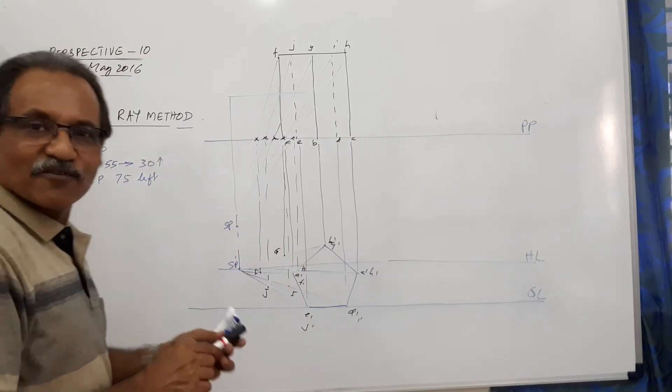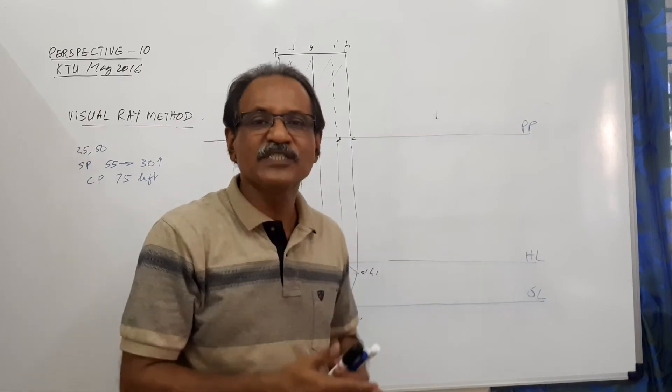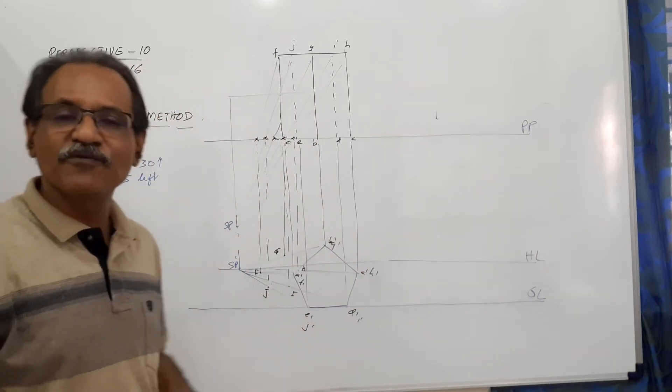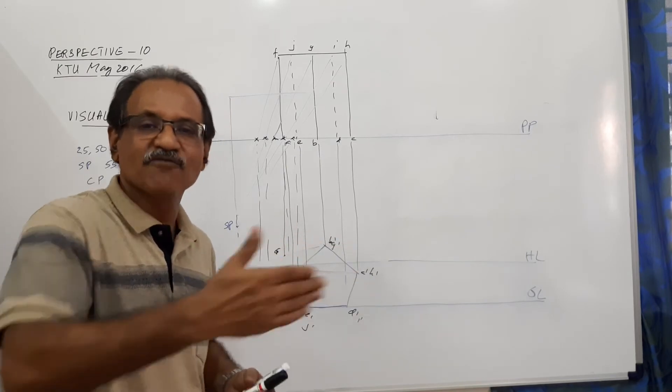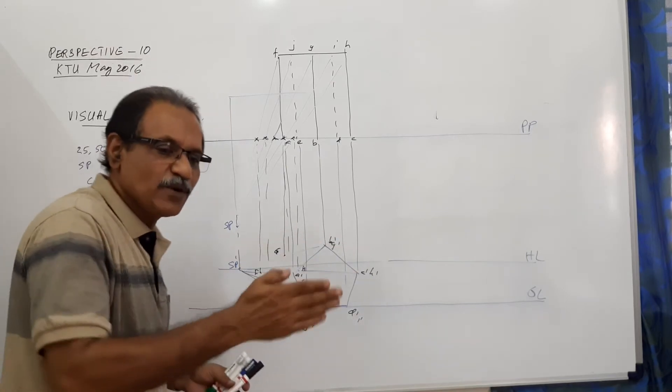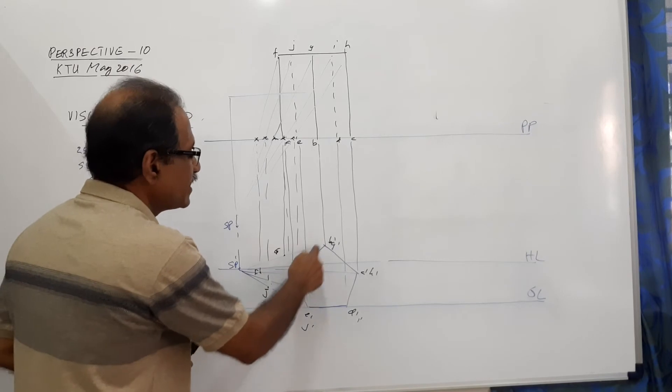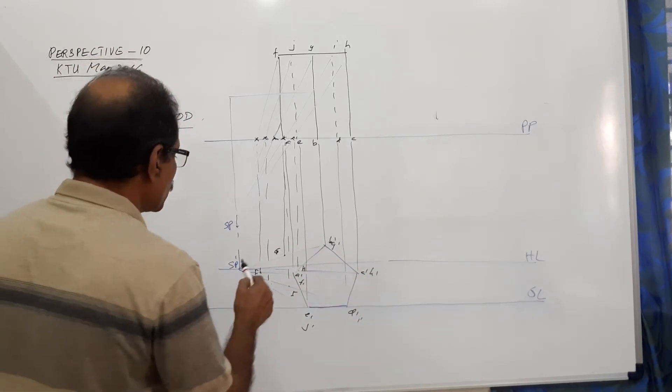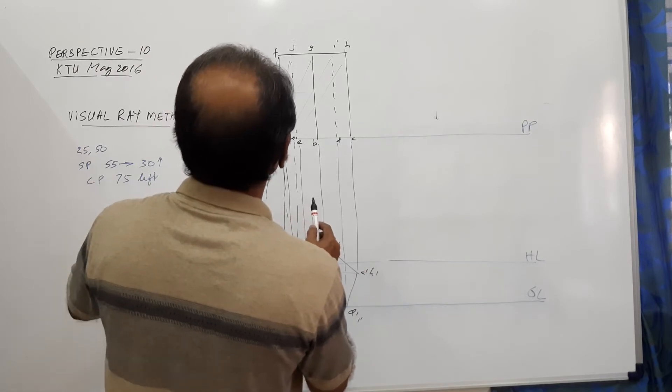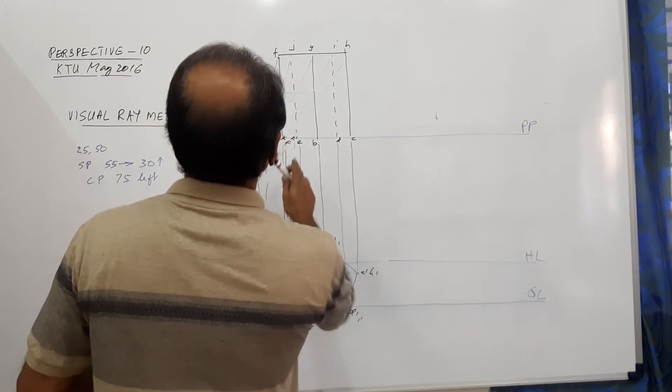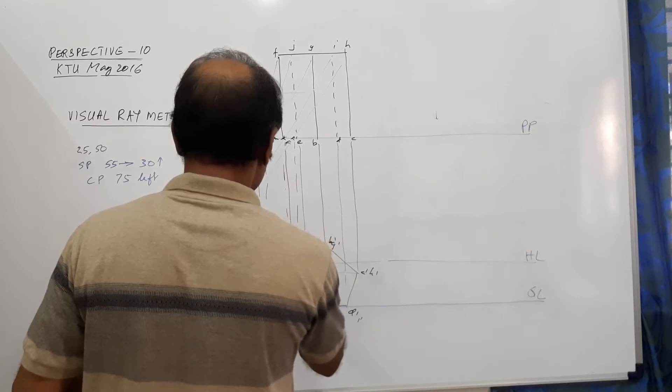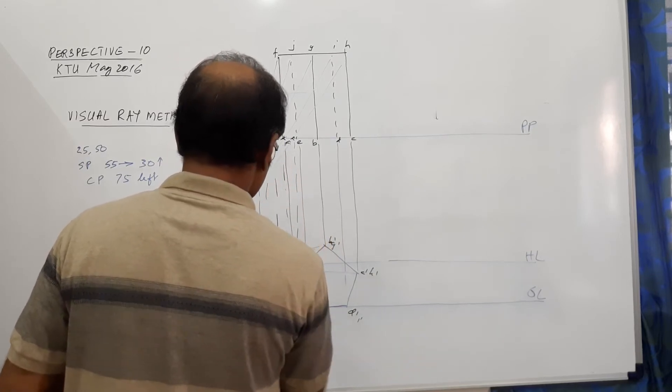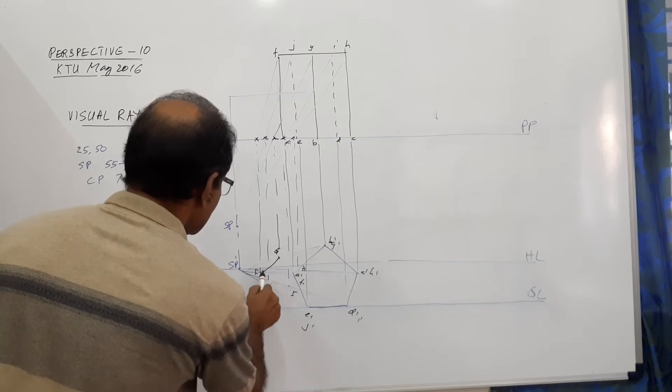Now, since the front pentagonal face is touching picture plane, this elevation itself is the perspective view of the pentagonal face. Since the front pentagonal face is touching picture plane, this itself is the perspective view of the front pentagonal face. Now, once you have got those points, this intercept of G is different. This is the intercept of G. Now you can connect.